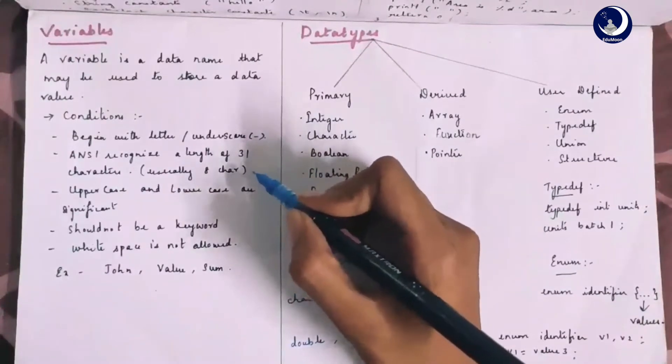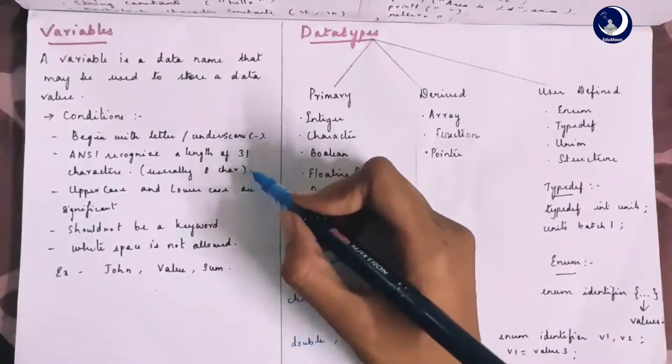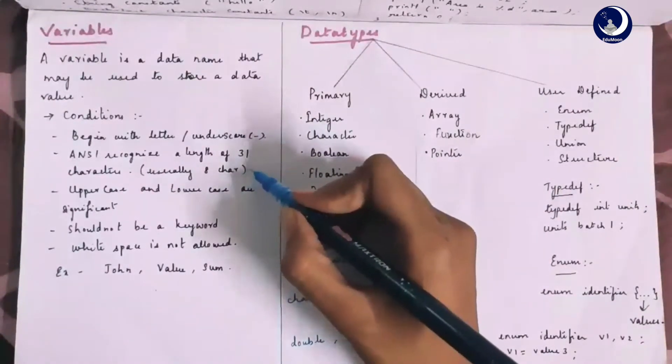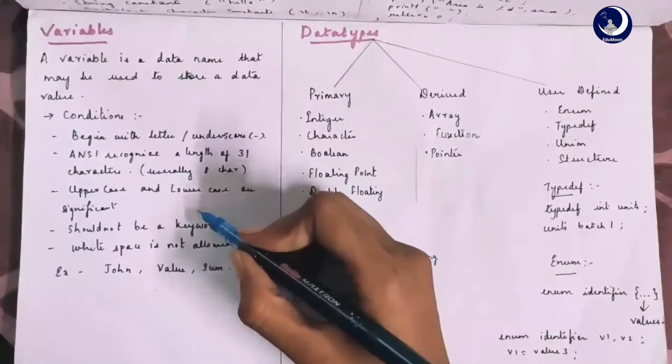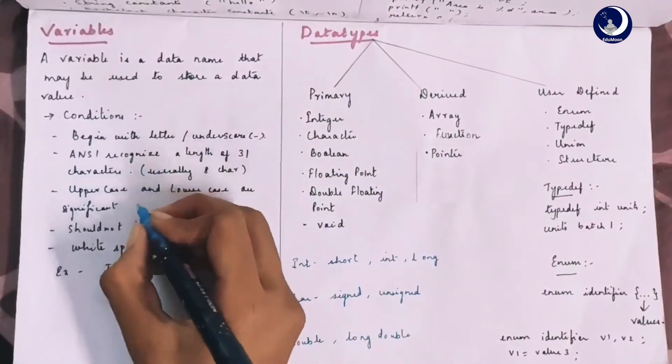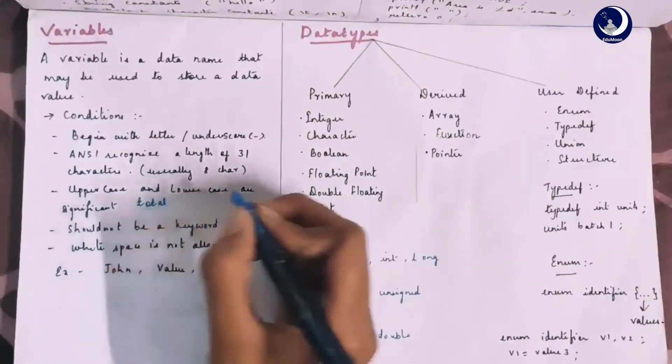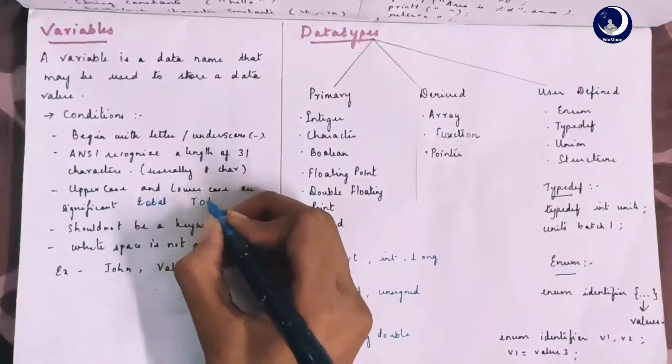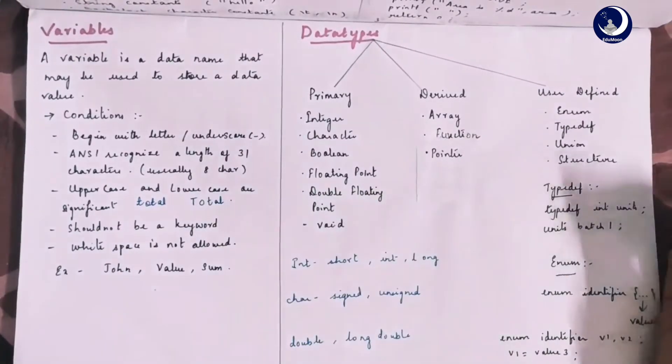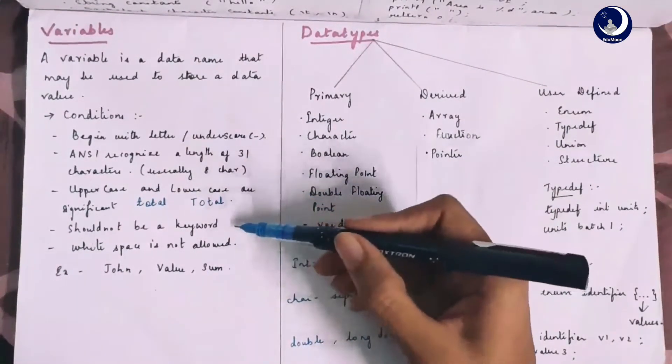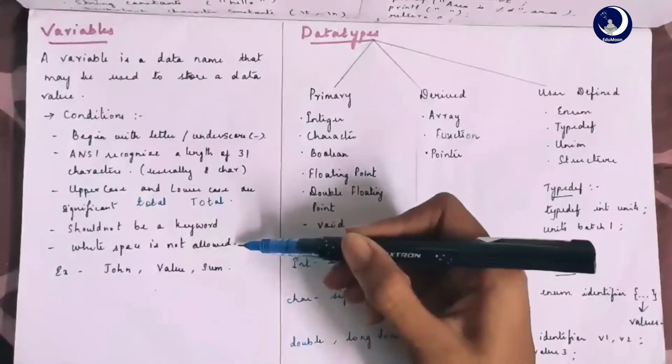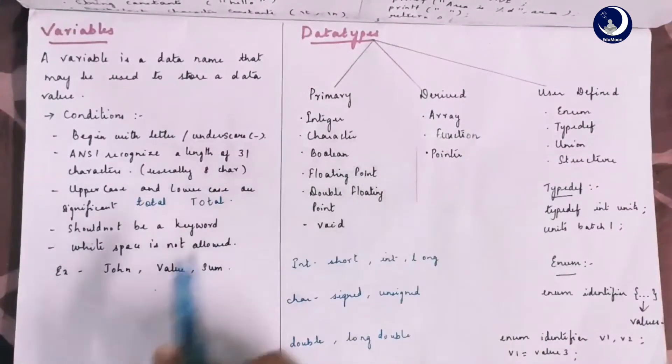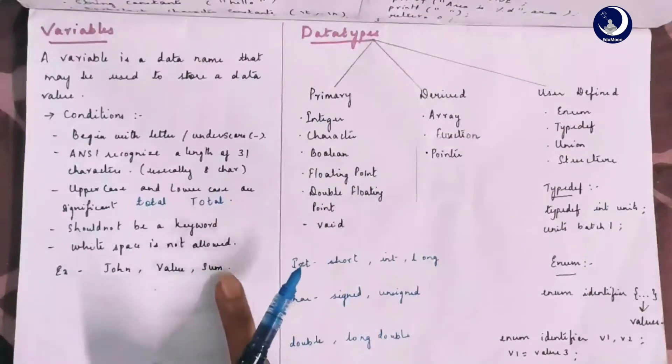Few compilers only recognize 8 characters of the variable name. Uppercase and lowercase letters are significant. That is, TOTAL is different from total. The variable names should not be a keyword and white space between the variable names is not allowed. Examples of variables are John, value, sum and so on.